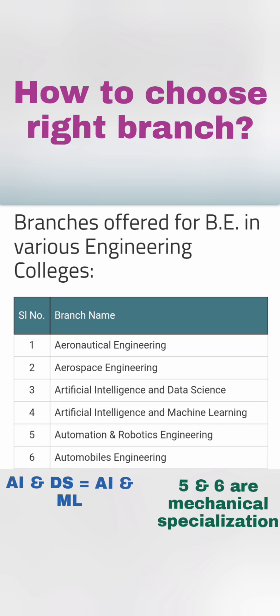Artificial Intelligence and Data Science, and Artificial Intelligence and Machine Learning are similar options — you can choose either based on your interest. Machine Learning is more maths-focused, whereas the Data Science branch is more maths plus statistics focused. Both are equal options.